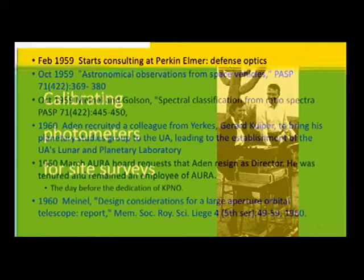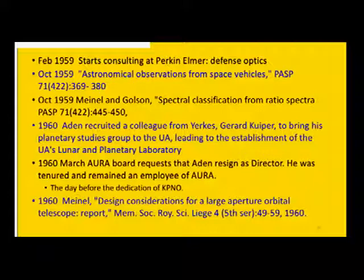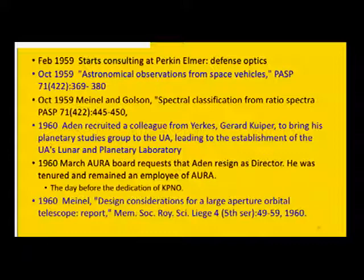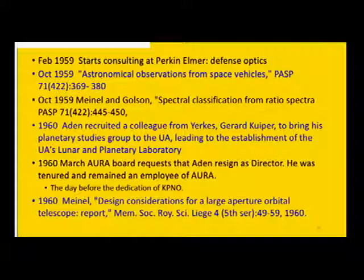Here we have a picture of Aidan and Marjorie calibrating photometers for their site survey; he did most of his work in the backyard of their house here in town. In February 1959 he starts consulting at Perkin-Elmer in the defense optics area. In October he writes a paper, 'Astronomical Observations from Space Vehicles,' 11 pages long. He was continuing with his scientific research — he put out a paper on spectral classifications. Aidan recruited Gerard Kuiper to bring his planetary studies group to the U of A, leading the establishment of the Lunar and Planetary Laboratory. In March, the AURA board requested that Aidan resign as director, but he was tenured and remained as an employee of AURA — he was actually asked to leave the day before the dedication of the observatory.